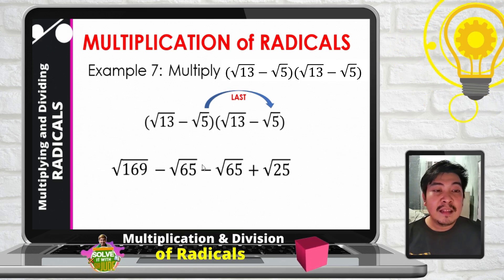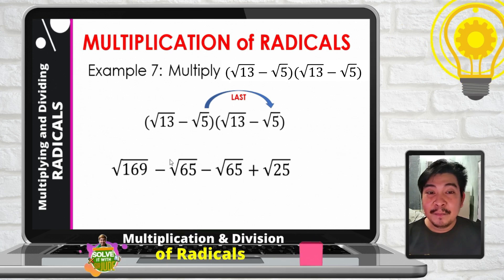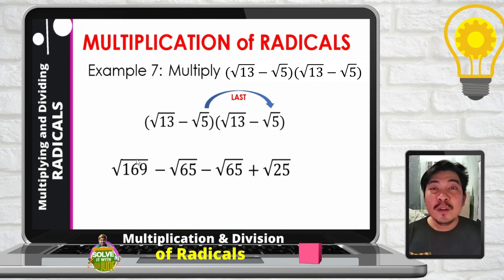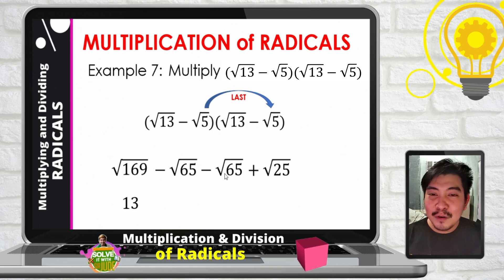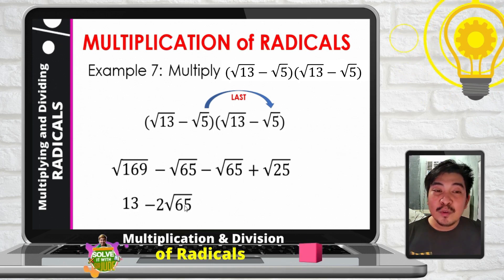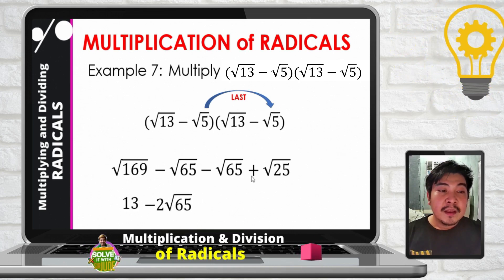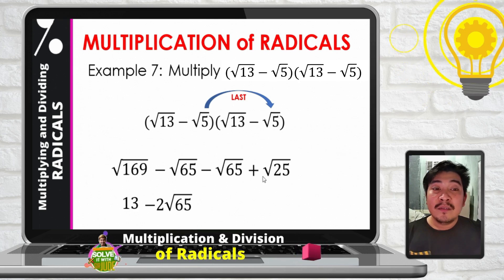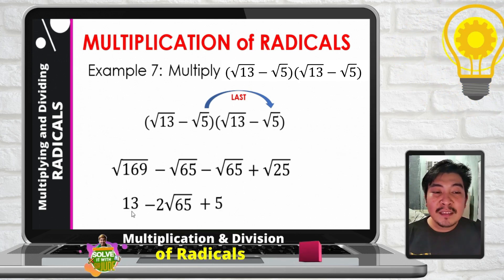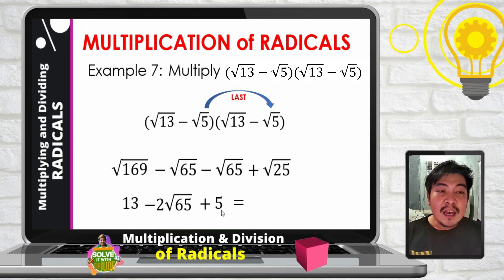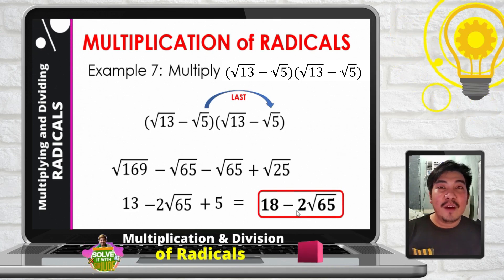Since the two negative square root of 65 terms are like radicals, we can combine them — negative square root of 65 minus negative square root of 65 gives negative 2 square root of 65. Square root of 169 is 13, and square root of 25 is 5. We can combine 13 and 5 to get 18. So the final answer is 18 minus 2 square root of 65.